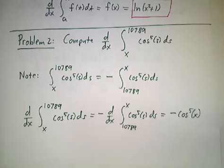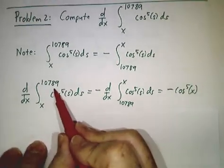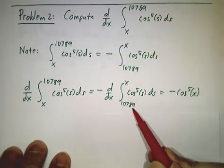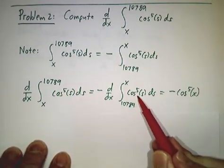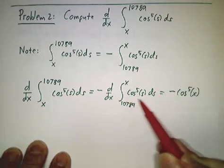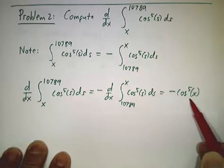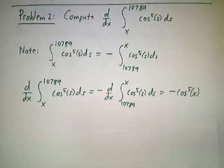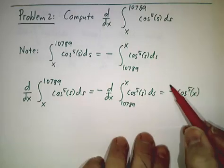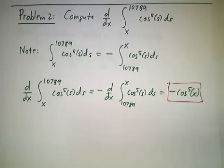So the derivative of the integral from x to 10,789 is minus the derivative from 10,789 to x. So that's minus f(x). In this case, f(x) is cos^5(x), and we're done. We turn it upside down, you pick up a minus sign. Otherwise, it's just like the first example.